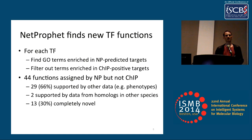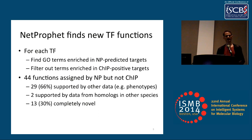Next, we turned to see if we could identify new functions for transcription factors that could not be identified from existing CHIP data. We did a GO enrichment analysis for the NETPROFIT-predicted targets of each transcription factor, and then the same analysis for CHIP targets, removing any GO terms identified by CHIP. After eliminating redundancies, we were left with 44 functions identifiable by NETPROFIT but not by CHIP. Two-thirds were supported by other data types, mostly mutant phenotypes; two were supported by data from homologs in other species; and 13 were completely novel.